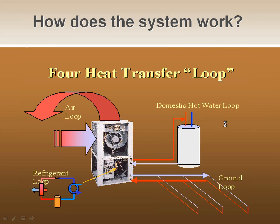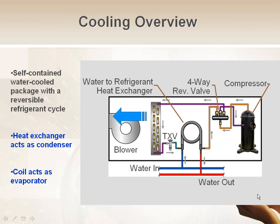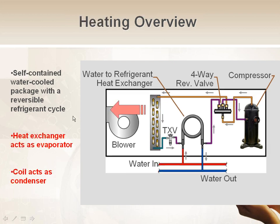Looking inside a geothermal unit — an air-cooled heat pump and a water-cooled heat pump are essentially the same, except we're rejecting heat to water instead of outside air. This is a self-contained water-cooled system with just a reversing refrigerant valve. In summer, the heat exchanger acts as a condenser rejecting heat to the water, while the coil acts as an evaporator taking heat out of the space and cooling the air. In winter, the system reverses: the heat exchanger acts as an evaporator and the coil acts as a condenser, heating air into the space by pulling heat from the groundwater loop.